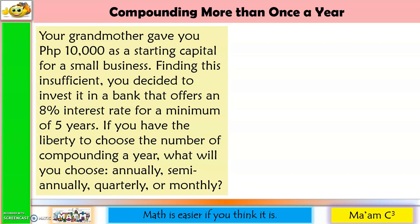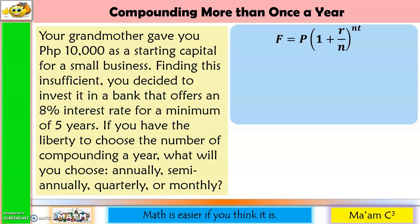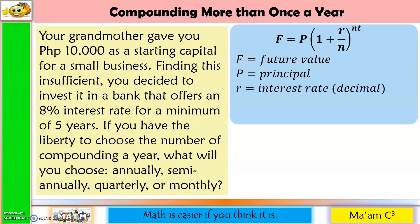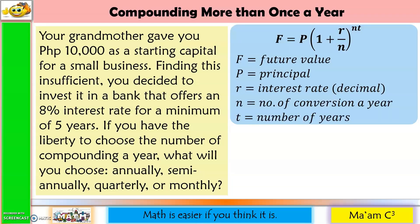Here is the formula we are going to use for compounding more than once a year. F is the future amount or future value. P is the principal amount. R is the interest rate that should be in decimal. N is the number of compoundings or conversions a year. And T is the time or number of years.